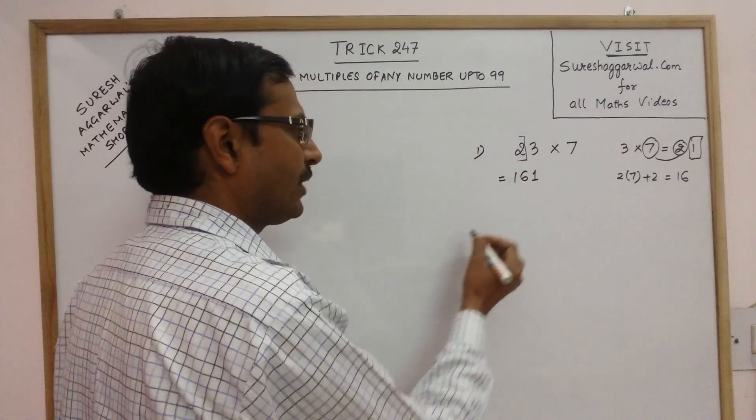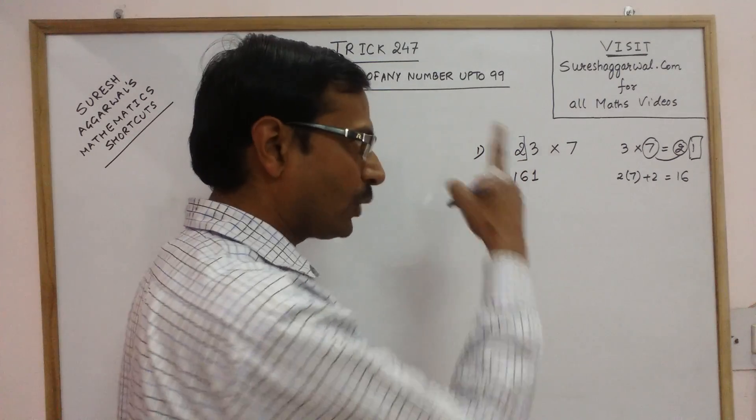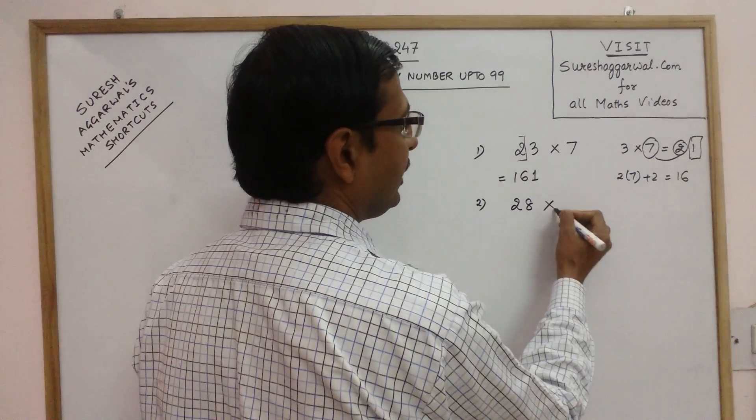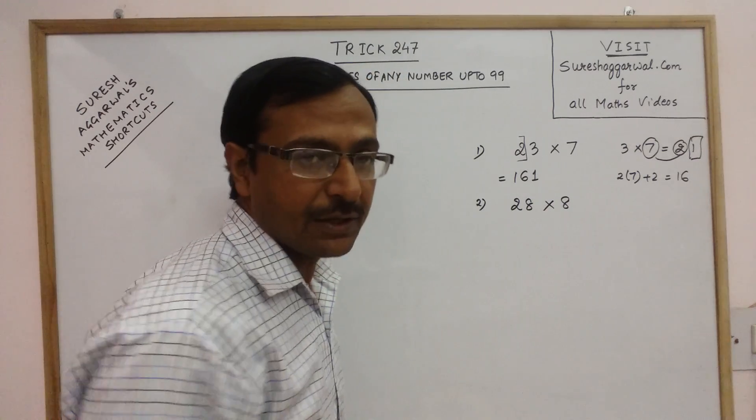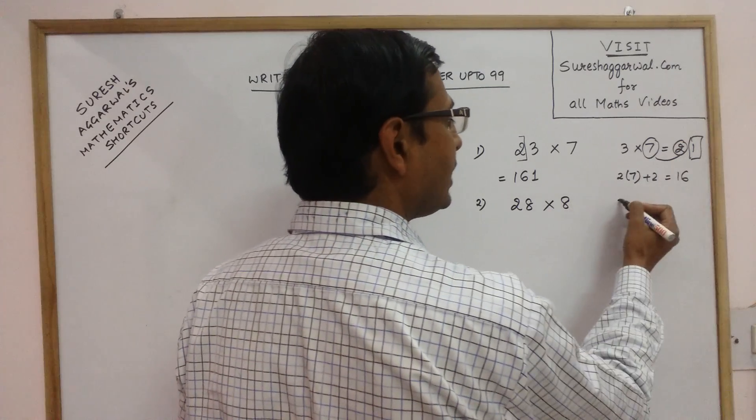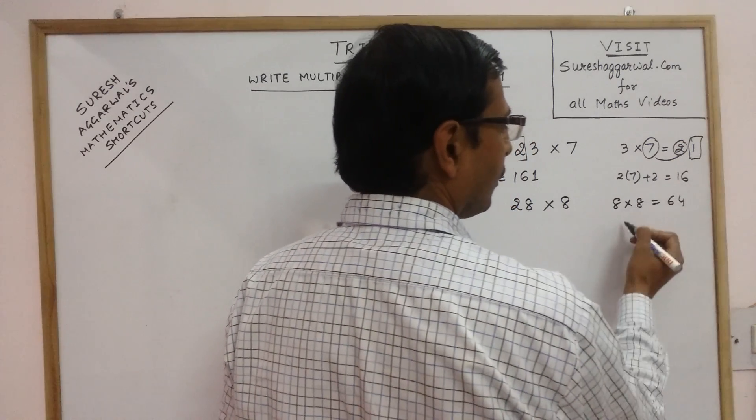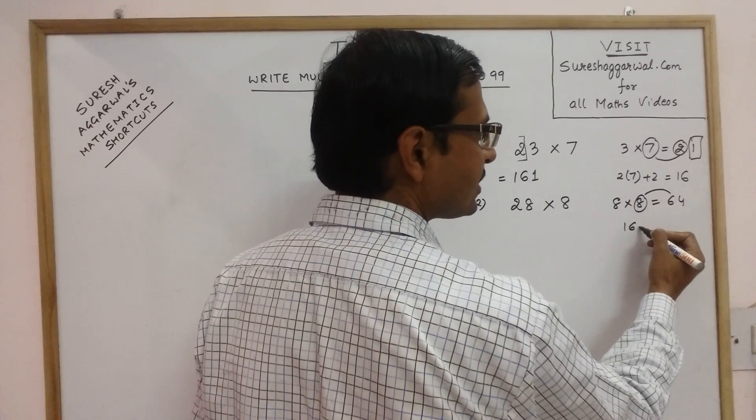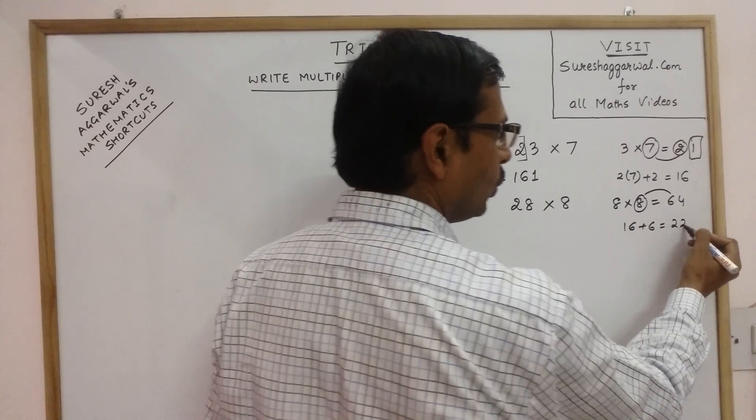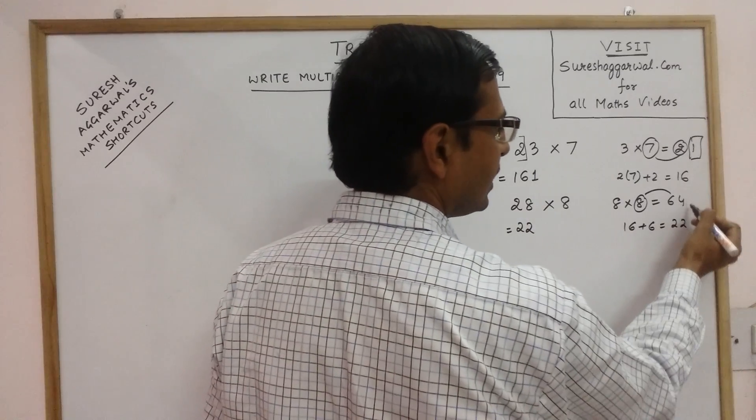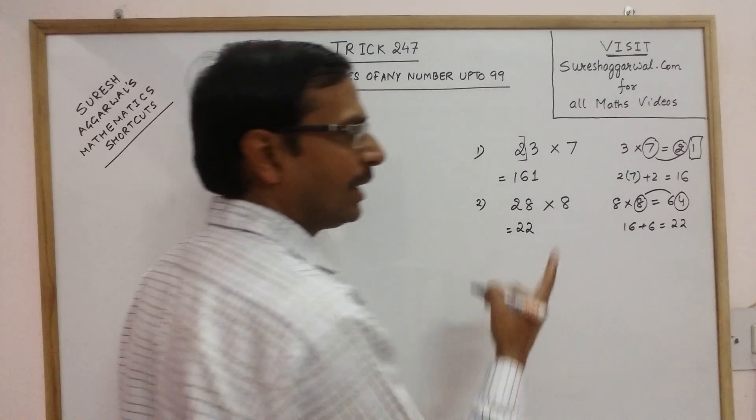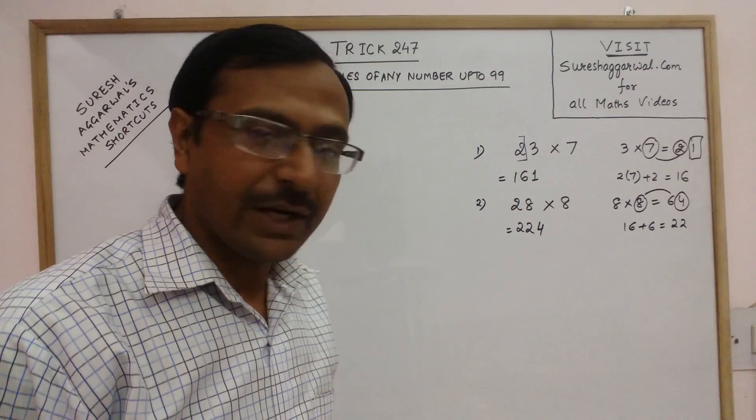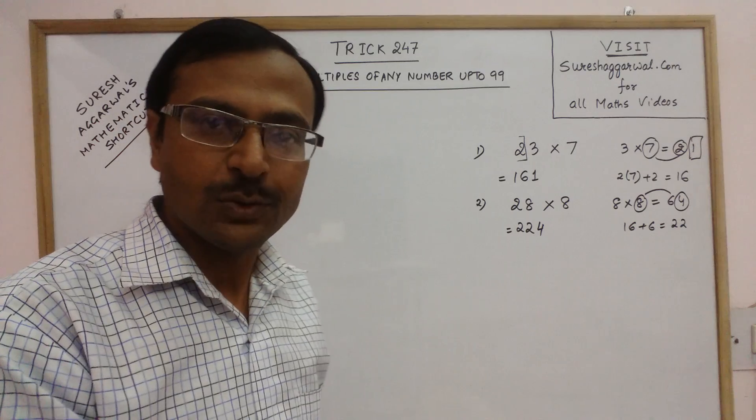Likewise you can take one more example of tables in the line of 20s. Say we have 28. We need to have the 8th multiple of 28. So what we do is 8 into 8 is 64. What is double of 8? Double of 8 is 16 and add this to this number 6 that is 22. So the first part is 22 and last part is the last digit there, 4. So 224 is the product of 28 and 8 or the 8th multiple of 28 is 224.